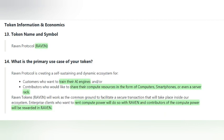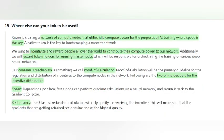People can easily give their computing power from their desktops, smartphones, etc. to Raven Protocol and get rewarded for renting their computing power. Raven is creating a network of nodes which will utilize the idle computing power for the purpose of AI training where speed is the key. People renting their computing power will be rewarded in RAVEN. Also, rewards will be given to token holders who run masternodes on their platform.